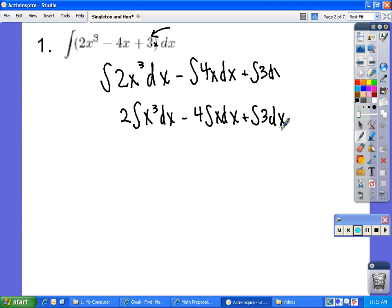The next step is to integrate. We end up with 2 times x to the 4th over 4 minus 4x squared over 2 plus 3x plus c.